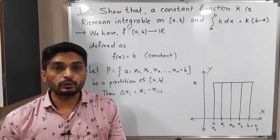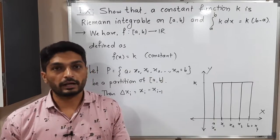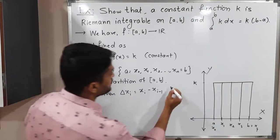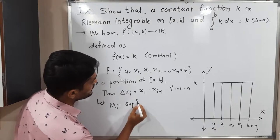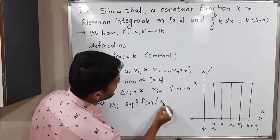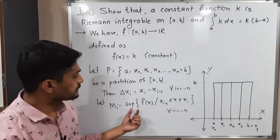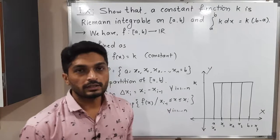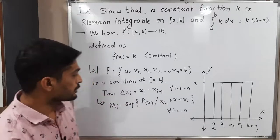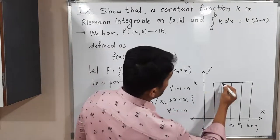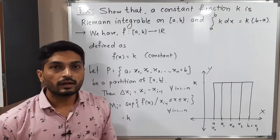After that, we find the upper integral. For the upper sum, we need to define capital Mᵢ. For all i running from 1 to n, Mᵢ = sup{f(x) : xᵢ₋₁ ≤ x ≤ xᵢ}. But the function is constant, so if you take the supremum or the infimum, its value is the same — it will be k. Since the function is constant, its maximum value is k, and for each point the function has the same value k. So the value of capital Mᵢ is k, for all i from 1 to n.